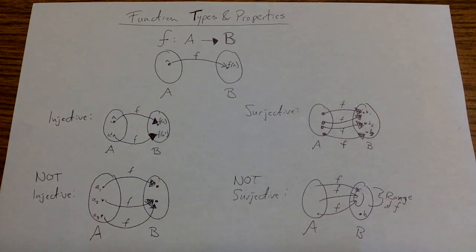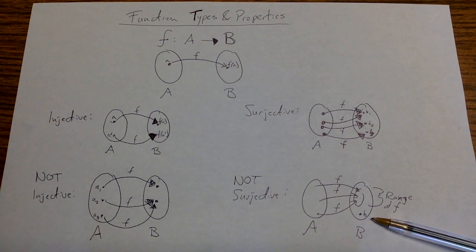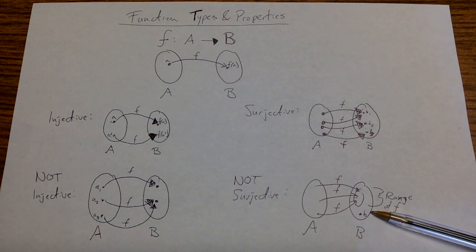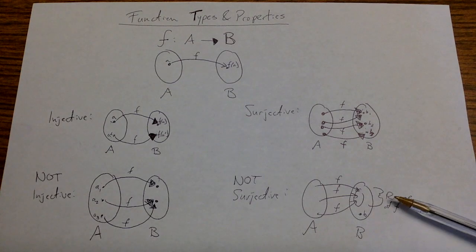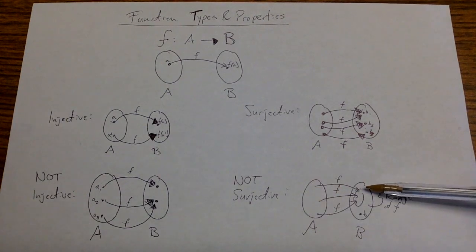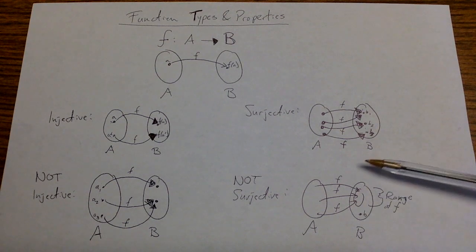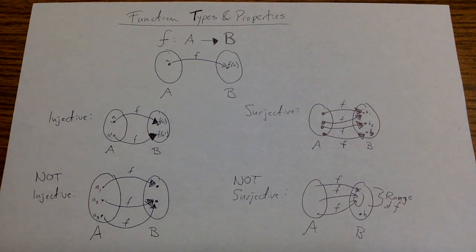If I'm not surjective, what it means is that I have some element, little b, inside my codomain, that is never hit by any of my function outputs. One way to think about it is that it's an element that's not in my range. So if everything from A is mapped to the function, it goes into the smaller set than B, not all of B, then I don't have a surjective function.